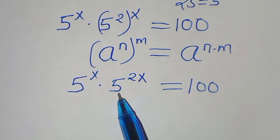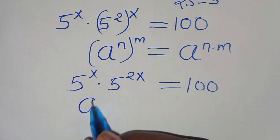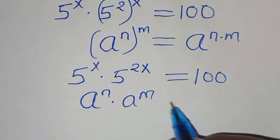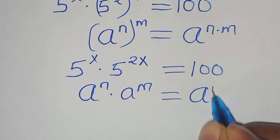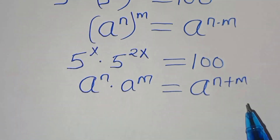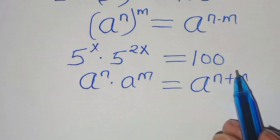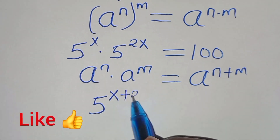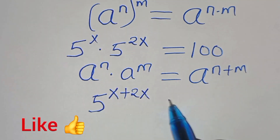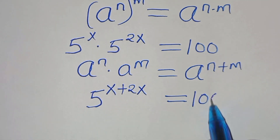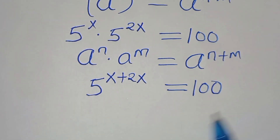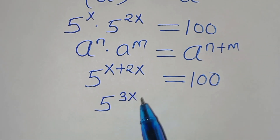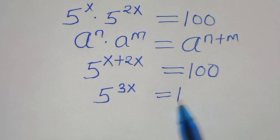Now 5 to the power of x times 5 to the power of 2x is in the form of a^n times a^m, which we can express as a^(n+m). Applying this exponent property, we have 5 to the power of x plus 2x, this is equal to 100. So x plus 2x is 3x, giving us 5 to the power of 3x equals 100.